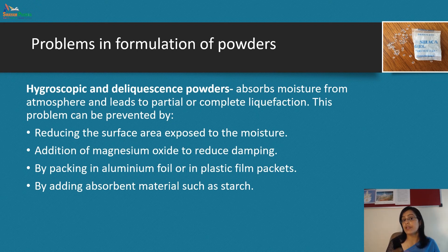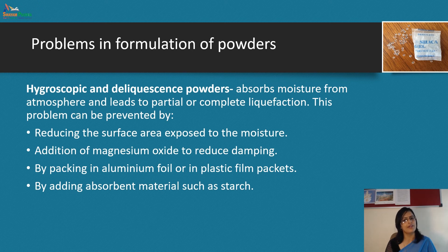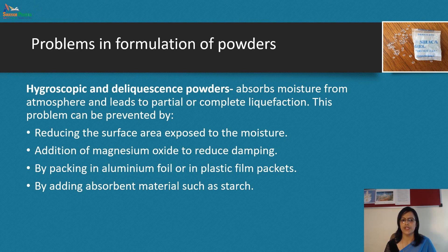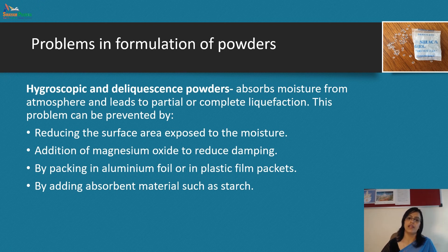The last topic of this module is problems encountered in the formulation of powder. First: hygroscopic and deliquescent powders. Hygroscopicity means the powder absorbs moisture from the atmosphere, leading to partial or complete liquefaction. This problem is prevented by reducing the surface area exposed to the environment. Addition of magnesium oxide helps reduce damping, and packing in aluminum foil or plastic film packets protects from the outer environment. Adding absorbent materials such as starch also helps.